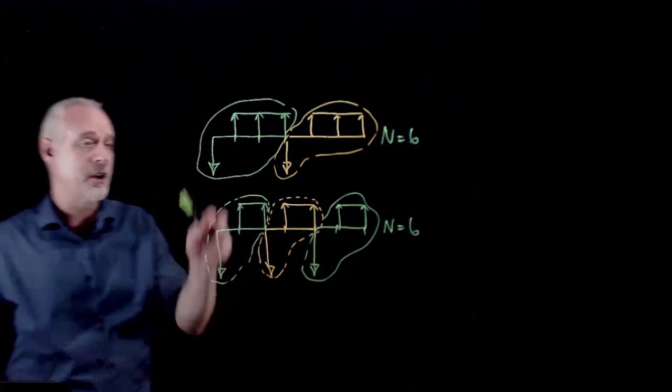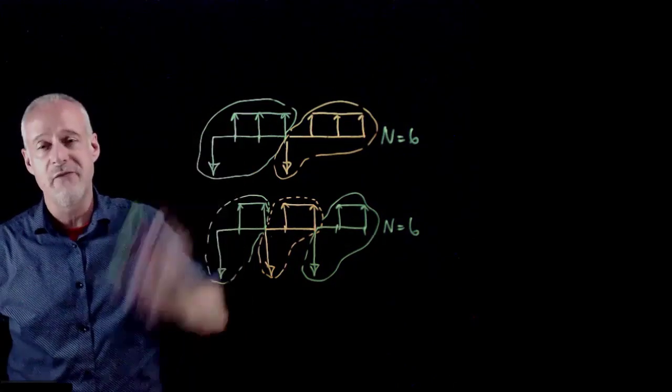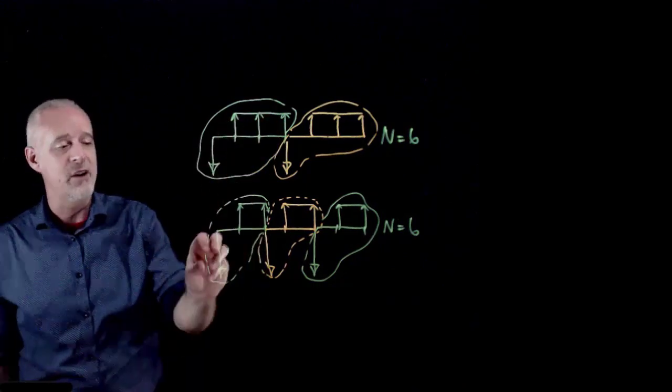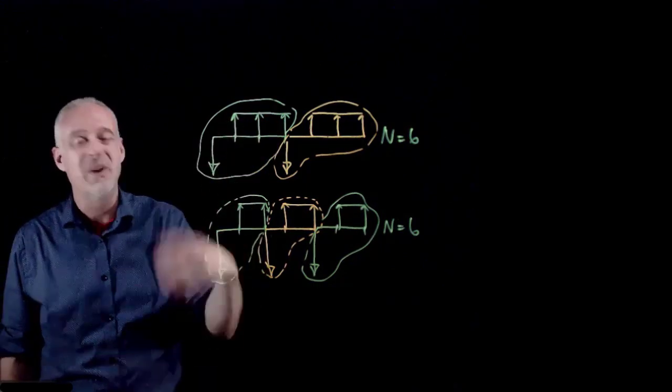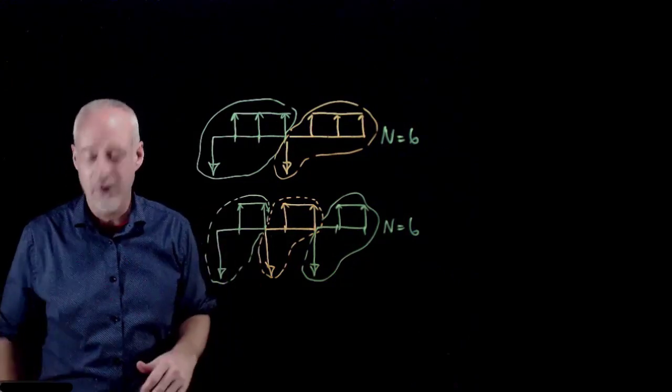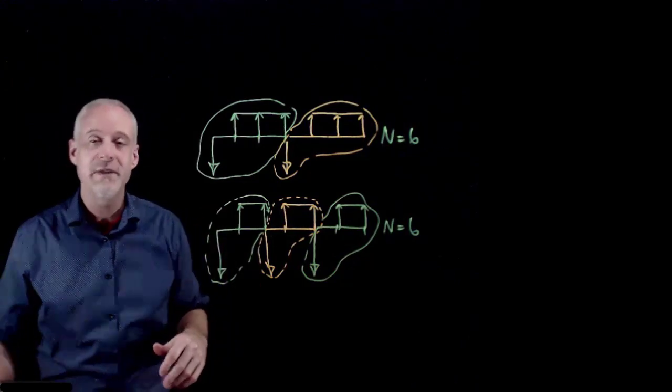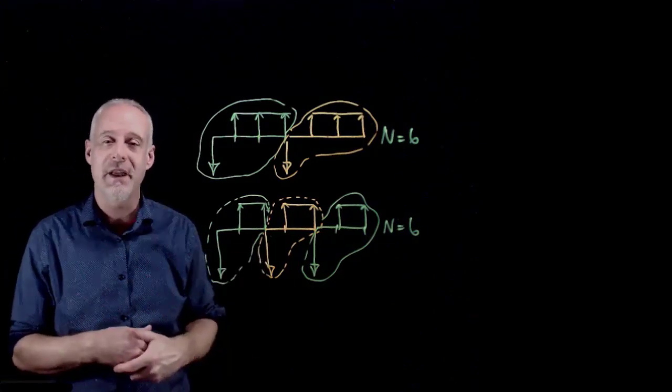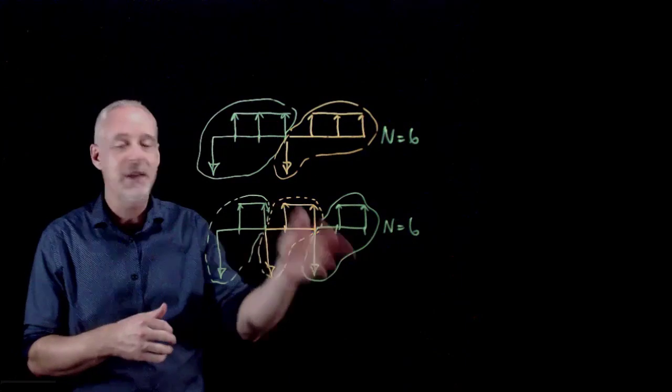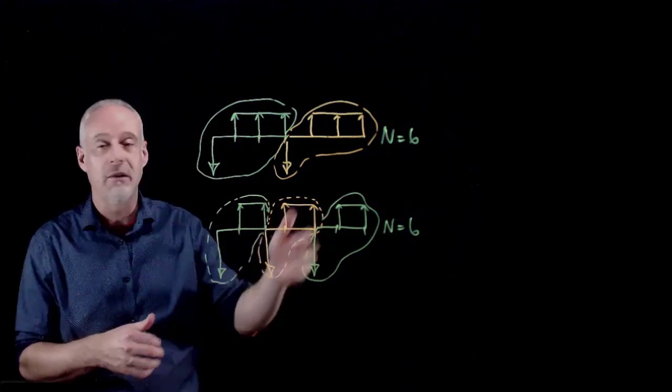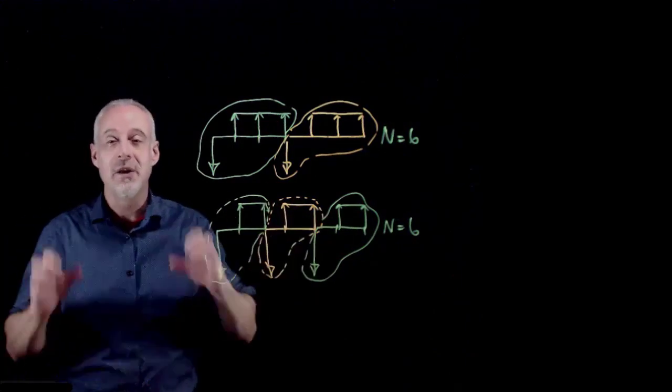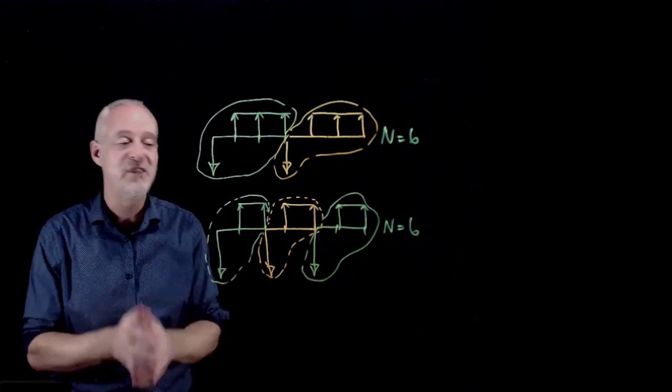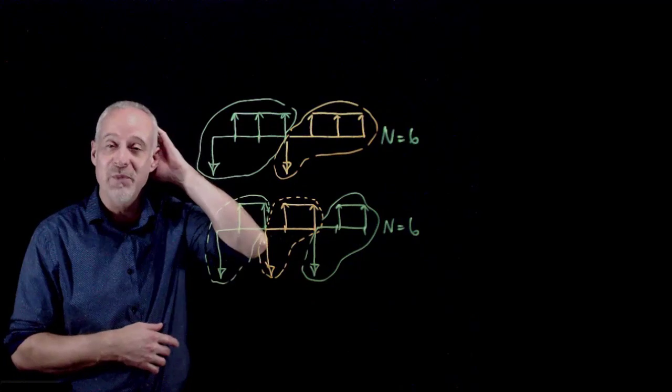So think about where I started. I started out with an investment alternative that was a three-year investment with return. And here I've got a two-year investment with return. But it's not fair to just straight up compare them. What I have to do is assume that I can just repeat that same investment again. And I repeat that same investment until I find the least common multiple of the number of years for the two investments.